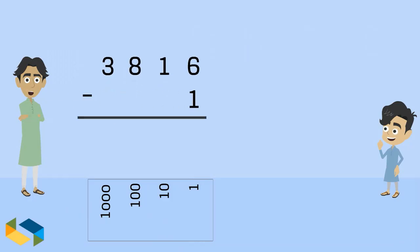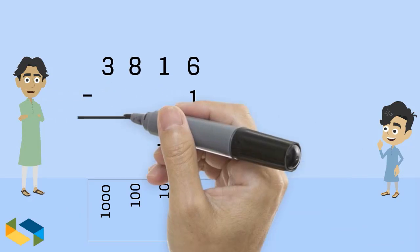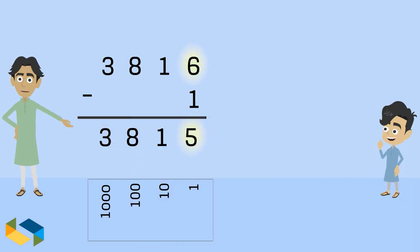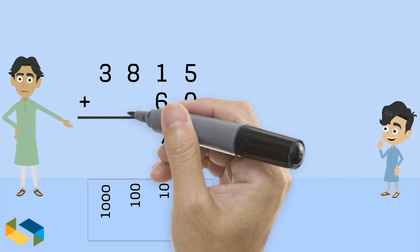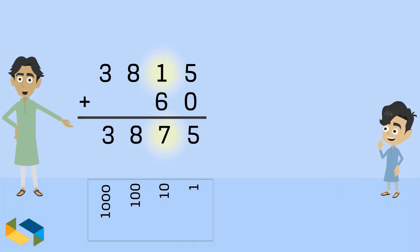Now let's say we subtract one from this number, we get 3815. Notice that the value in the ones place got changed. Add a 60 to this number, we get 3875, with the tens place value getting changed.